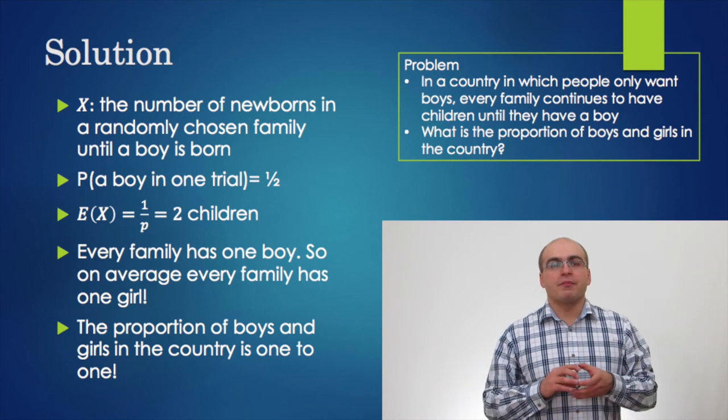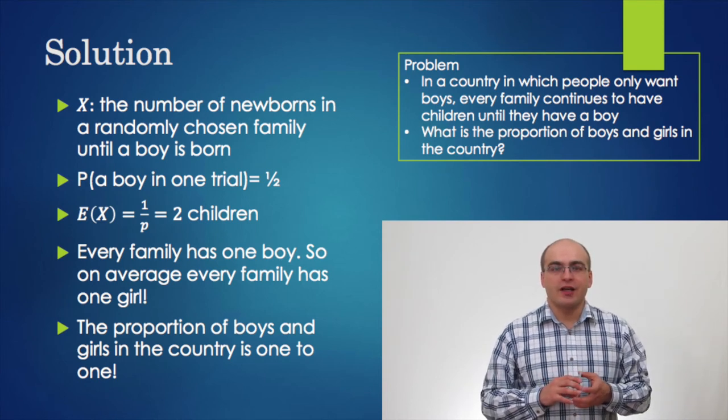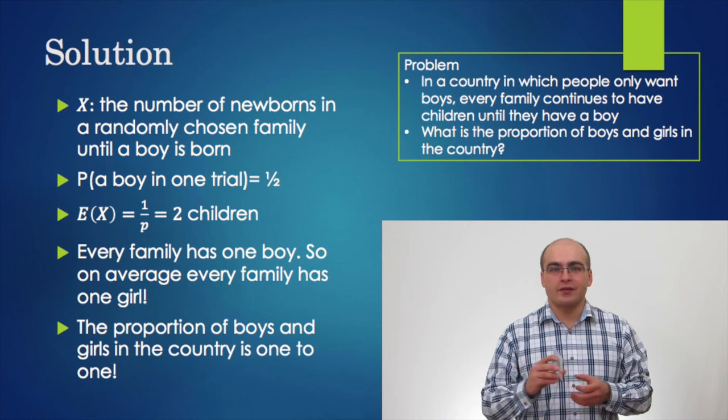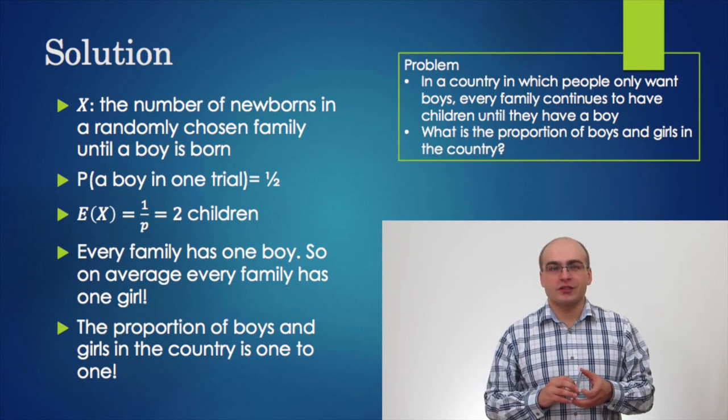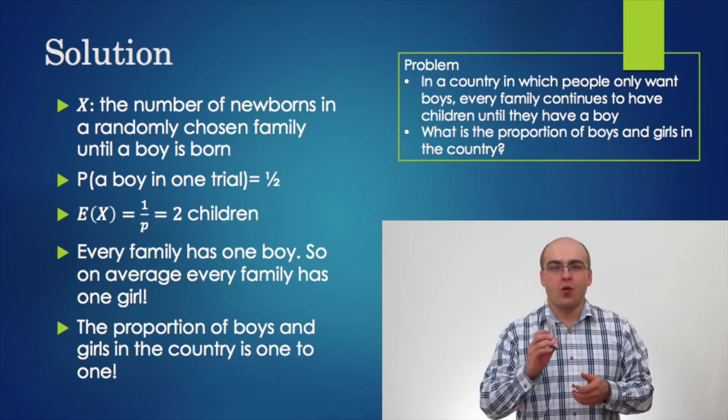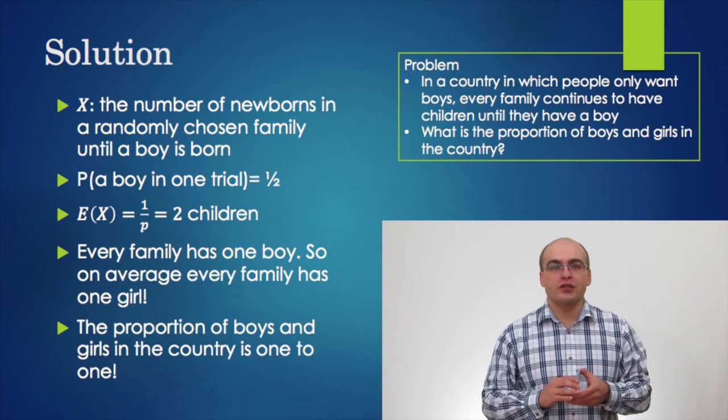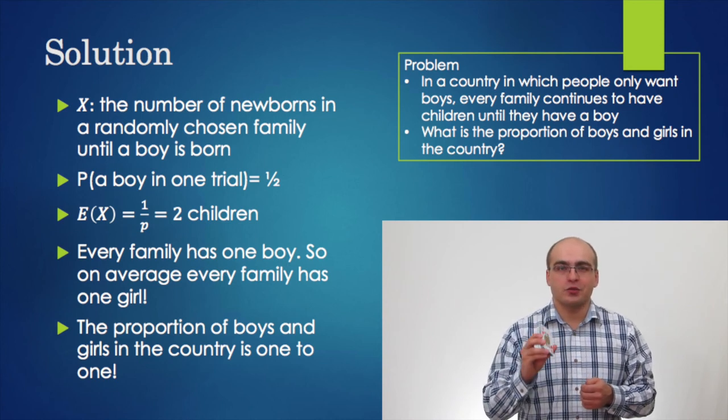In other words, the proportion of boys and girls in the country is 1 to 1. So, it is not important what the families want to have. The proportion would be just the same, 1 to 1.